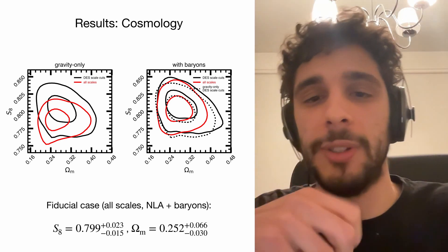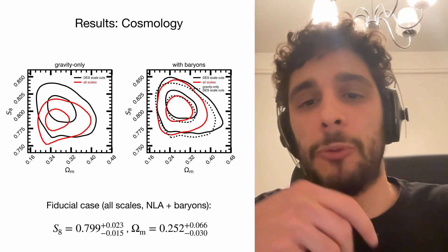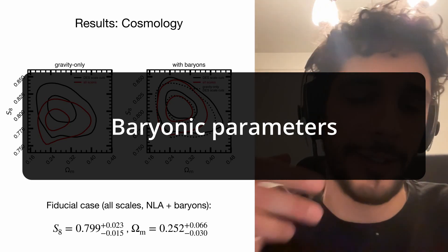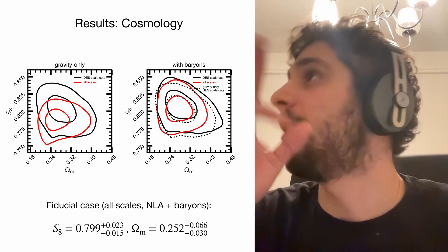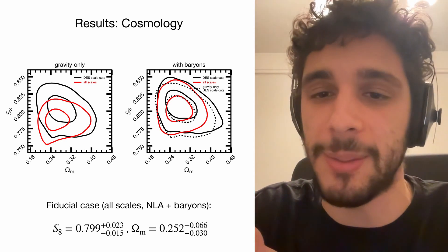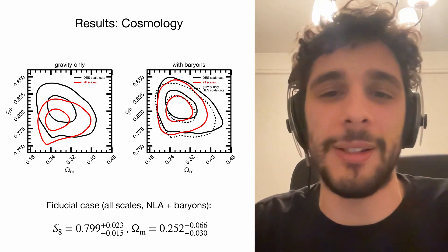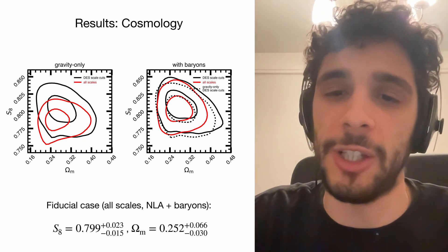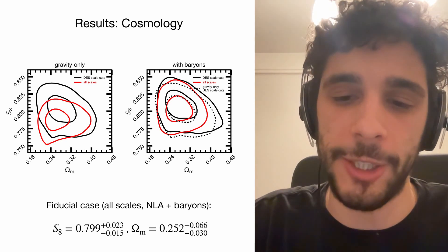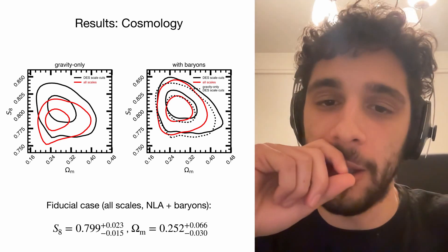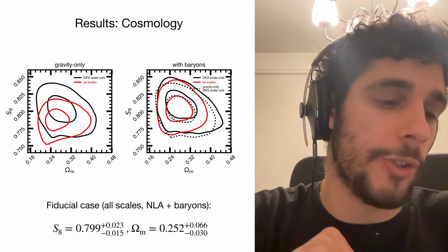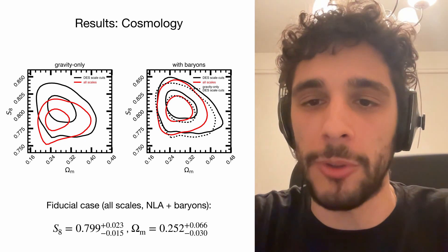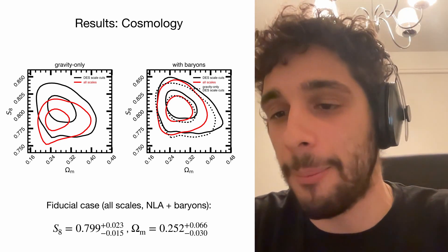The reason the improvement is modest despite 45% more data is that baryonic physics and cosmology are correlated. By marginalizing over seven baryonic parameters conservatively, we pay a price. However, if we fix the other cosmological parameters to values from the BAHAMAS hydrodynamical simulation — which we believe is realistic — we do find improved constraints. The gain from small scales also depends on shape noise and number density, so higher-redshift, higher-number-density surveys will benefit more provided the model is accurate.